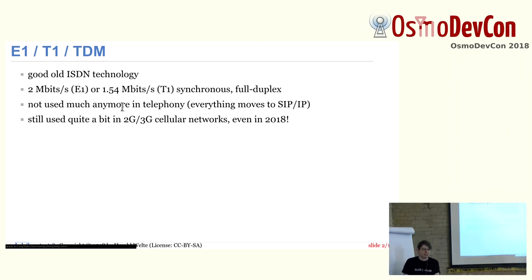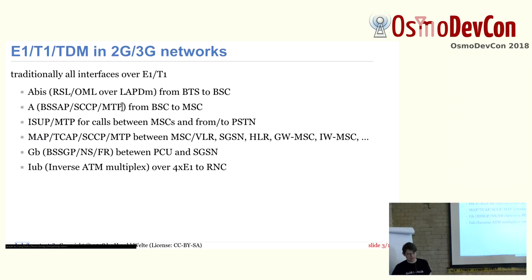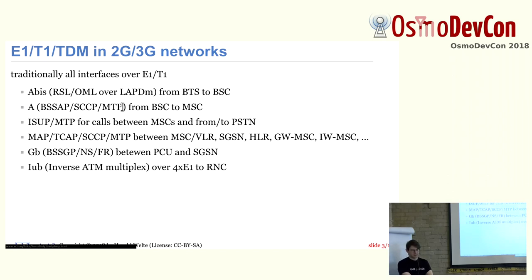However, E1 is still used quite a bit today in 2G and 3G cellular networks, even in 2018. Many people don't know this or assume it's gone, but in reality it's not. So where is E1/T1 used in GSM, 2G, and 3G networks?